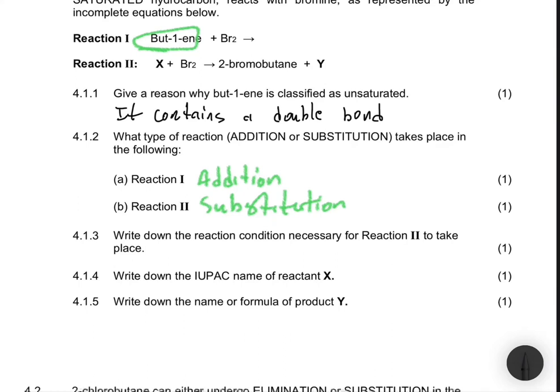4.1.3: Write down the reaction condition necessary for reaction 2 to take place. For reaction 2 to take place, we need heat, we need sunlight, but from sunlight we're still looking for heat from the sunlight, or we need UV light.